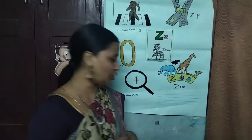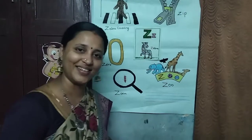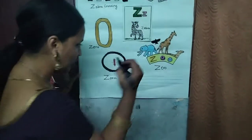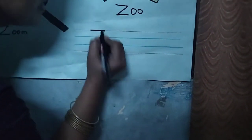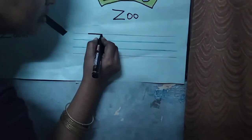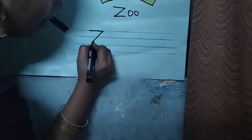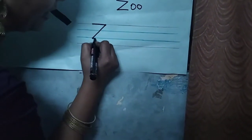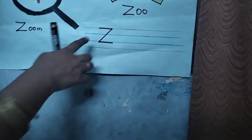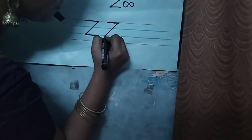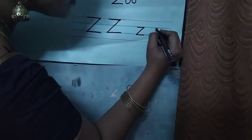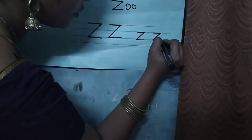Ma'am will show you how to write the capital letter Z and small letter Z. Take a close look. This is the red line — ma'am is going to put a sleeping line, then a slanting line till the second blue line, and then again a sleeping line. This is capital letter Z. For small letter Z, you have to write between the two blue lines.